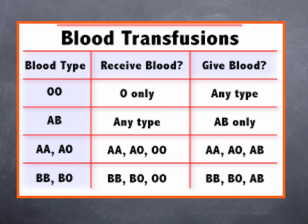This chart gives you an idea of blood type compatibility for transfusions, so that there's no clotting or clumping reaction. A person with blood type O has A and B antibodies in the blood serum, so they can only receive blood from someone with type O. However, they are the universal donor — they can give blood to any blood type, because there are no antigens on the surface that would cause an antibody-antigen reaction.